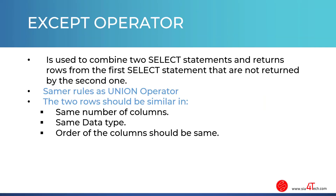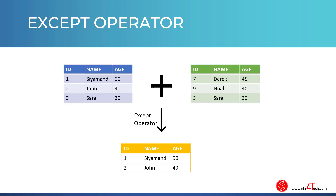The EXCEPT operator is used to combine two SELECT statements and returns rows from the first SELECT statement that are not returned by the second one. The same rules for the UNION operator are applied: the two SELECT statements should have the same number of columns, the same data types, and the order of the columns should be the same.